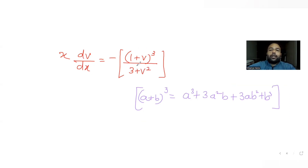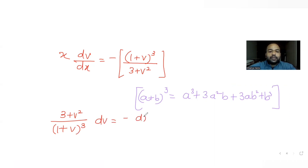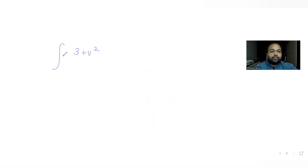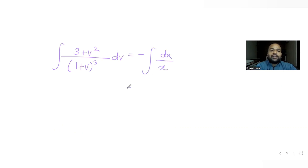Taking all v terms to the left-hand side, we get (3 + v²) / (1 + v)³ dv = −dx/x. We have now separated the two variables v and x. Integrating both sides separately: the integral of (3 + v²)/(1+v)³ dv equals −∫dx/x, and −∫dx/x is simply −log|x| + constant C.